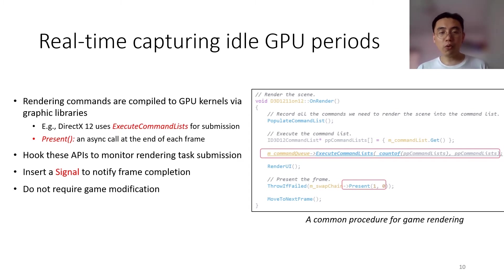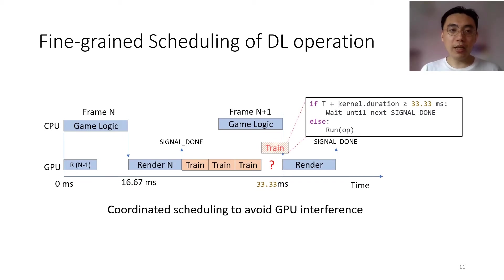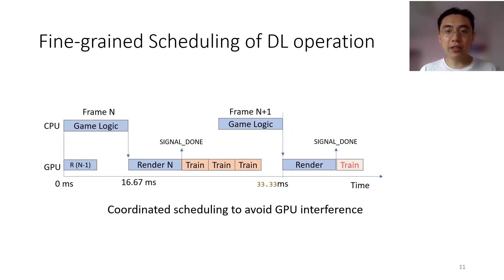Once we capture the idle GPU periods, we can submit GPU kernels of deep learning training to harvest them. A deep learning kernel is allowed to be submitted only when it can complete before the rendering of the next frame, to avoid interference on the GPU timeline. If a deep learning kernel cannot complete in the idle GPU period, it will be postponed to the next idle period.